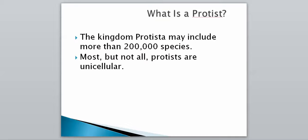So this kingdom will include more than 200,000 species, and most, but not all, are going to be unicellular — that's just being that they're made out of one cell. And this has kind of been classified as almost a catch-all group, so something that doesn't fit into the plant, animal, or fungi thing is going to fall underneath the protists.